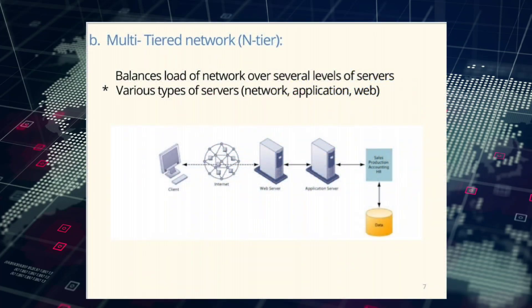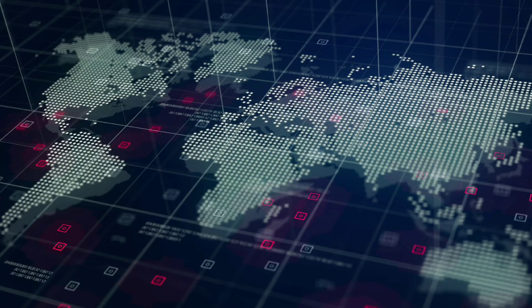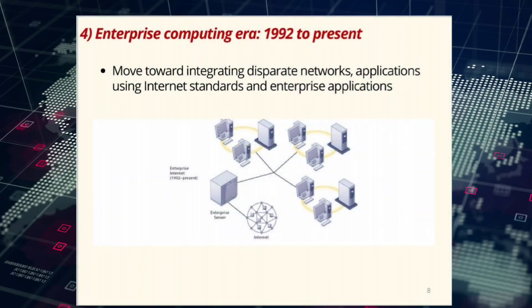A multi-tiered network balances the load of the network over several levels of servers. Various types of servers include network, application, and web servers. Number four: enterprise computing era, 1992 to present — a move toward integrating disparate networks and applications using internet standards and enterprise applications.